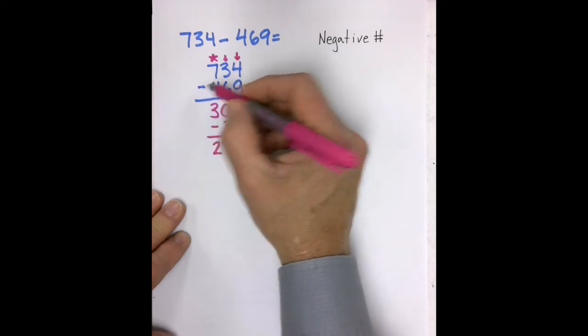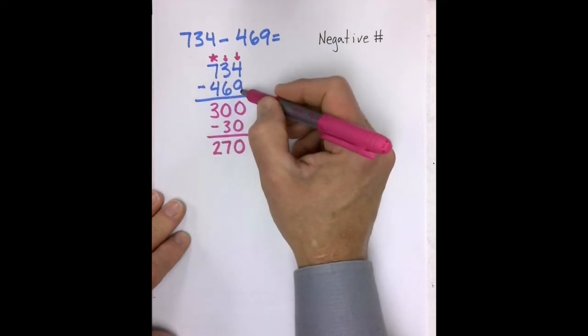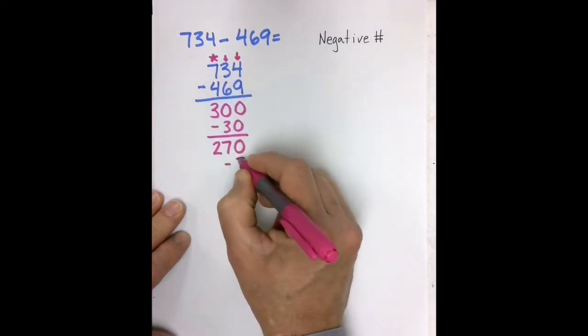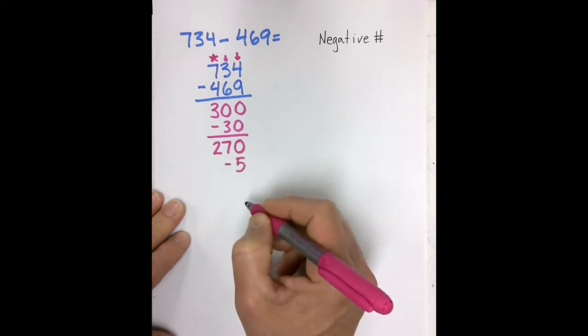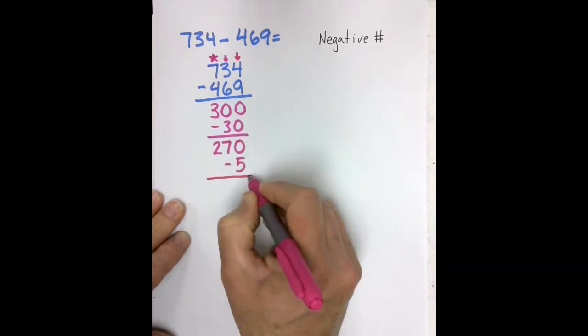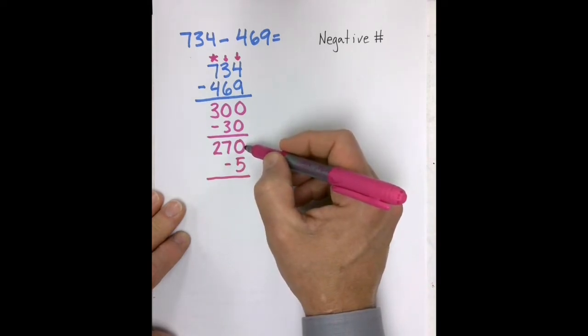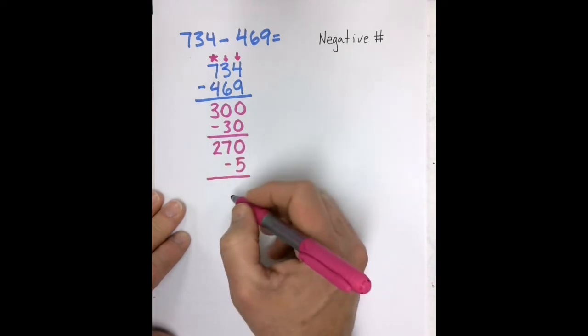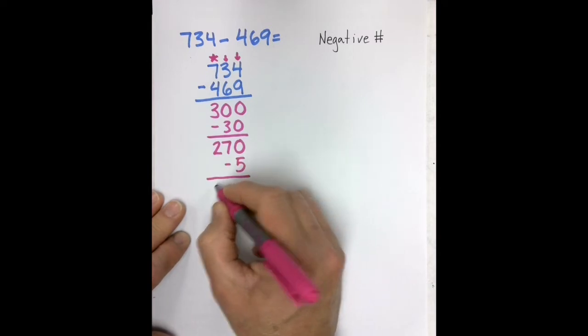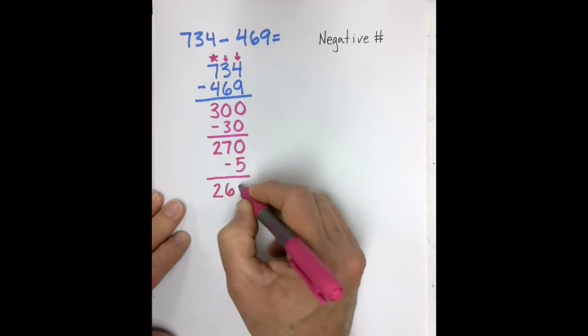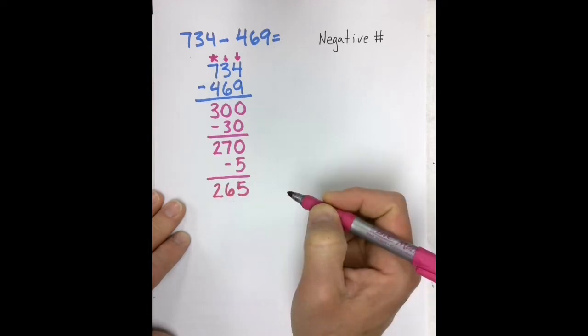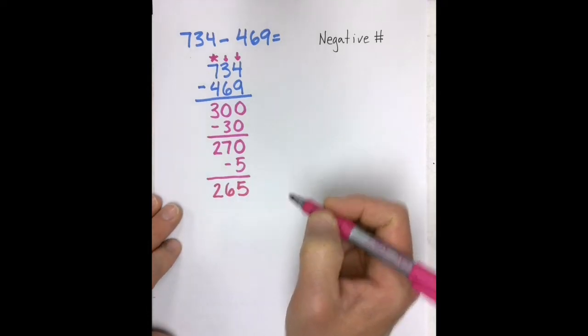Four, take away 9, or 4 minus 9 is a negative 5. I write my negative 5 down here, and then I would go ahead and find what is the difference between 270 and negative 5, or 270 minus 5. Which is pretty easy for me to do. It's only 5 away from 270, which would be 265. And now I have my answer.